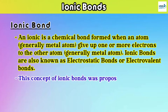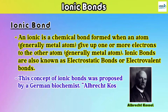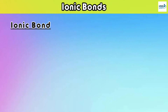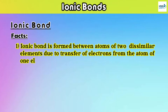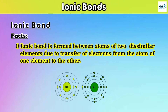This concept of ionic bond was proposed by a German biochemist named Albrecht Kossel, and the concept is based on some facts. Fact number one: an ionic bond is formed between atoms of two dissimilar elements due to transfer of electrons from the atom of one element to the other. So any ionic bond forms between two different elements, and by forming an ionic bond they transfer electrons to each other.